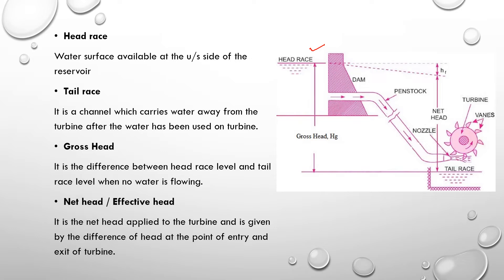The gross head is the difference between the tail race and head race levels when no water is flowing. Next, net head or effective head — it is the net head applied to the turbine, given by the difference of head at the point of entry and exit of the turbine.